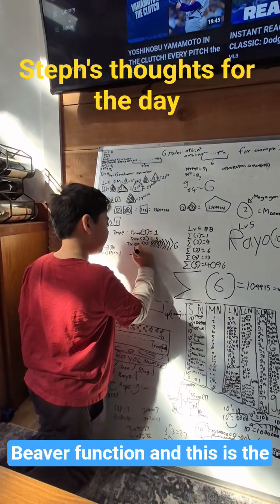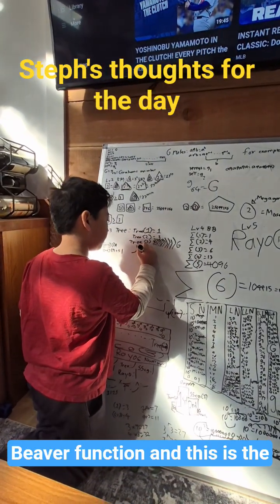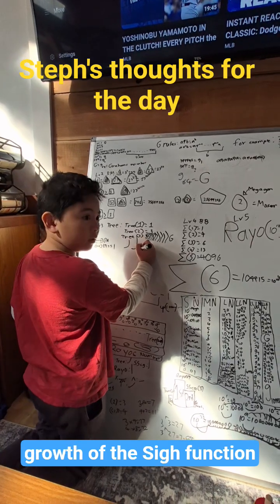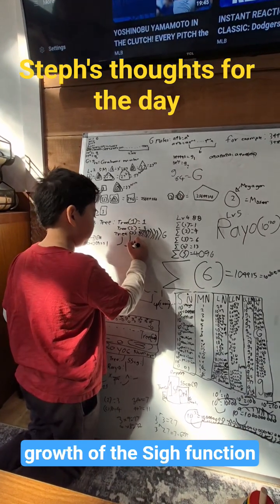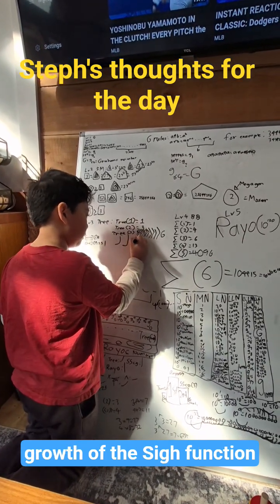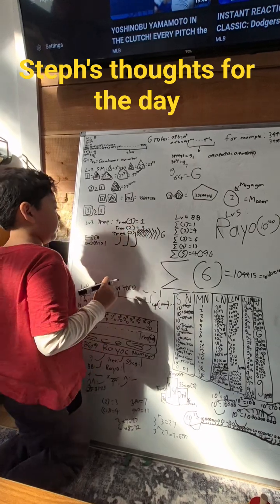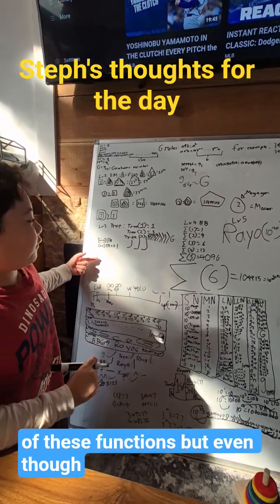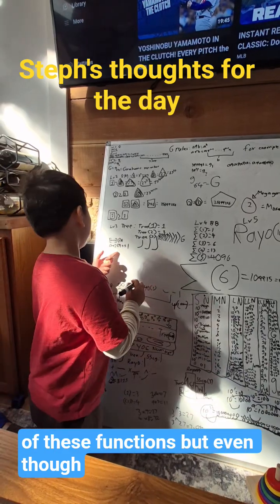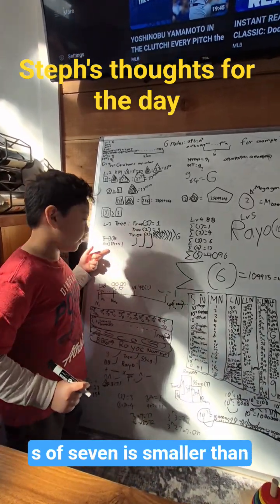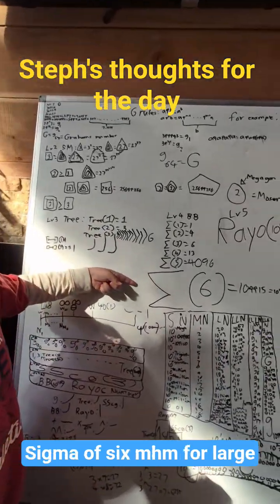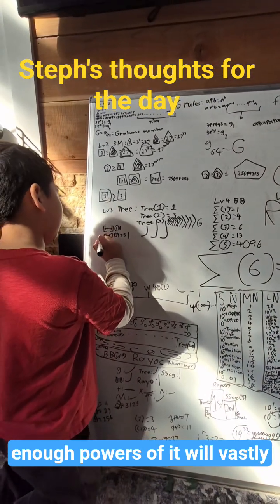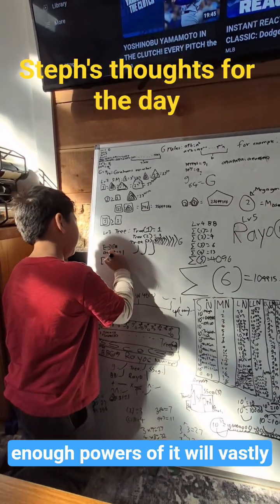This is the Xi function, and this is the growth of the Xi function — it will vastly outgrow any other of these functions. But even though Xi of 7 is smaller than Sigma of 6, for large enough powers, Xi will eventually outgrow the Sigma function.